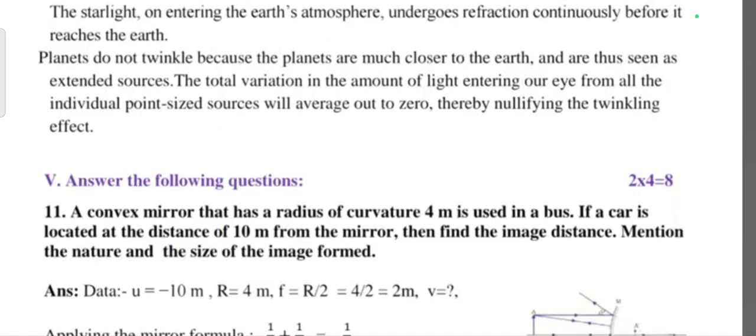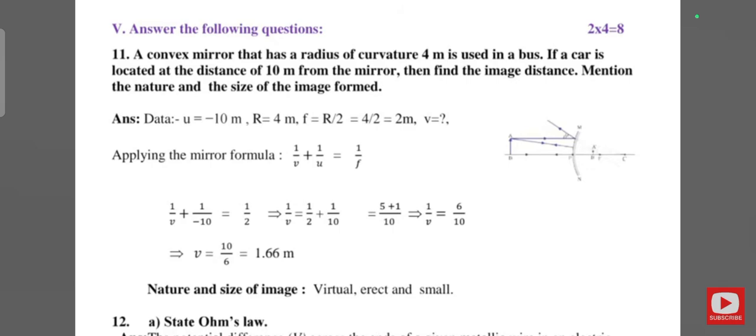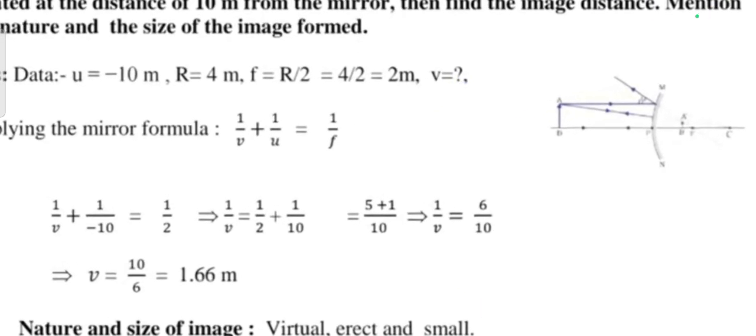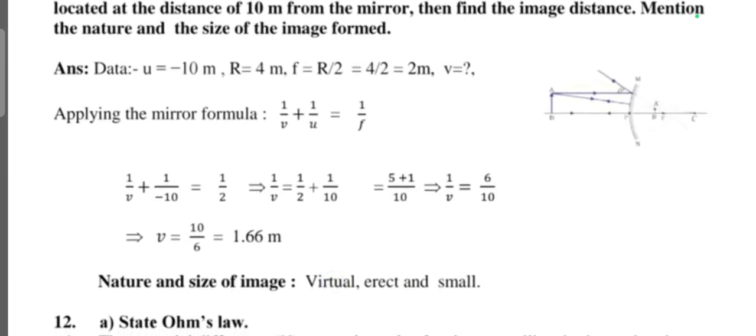Question number eleven, four more questions. A convex mirror that has a radius of curvature 4 meter is used in a burst. If a car is located at a distance 10 meter from the mirror, then find the image distance. Mention the nature and size of the image formed. So distance u is minus 10 meter, radius of curvature R is 4 meter, focal length f is R by 2, that is 4 by 2, that is 2 meter. We have to find the size of the image v. So formula we know: 1 by v plus 1 by u is equal to 1 by f. 1 by v plus 1 by u is minus 10, which is equal to 1 by 2. Solve this, we will get the value of v. Nature and size of the image is virtual, erect and small.